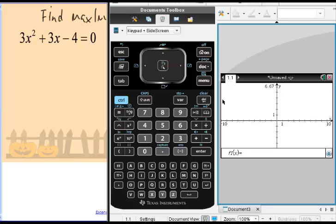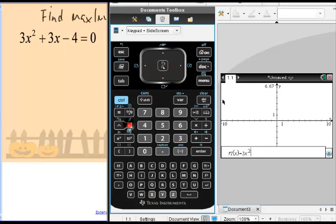Put in 3x squared plus 3x minus 4 and graph that.